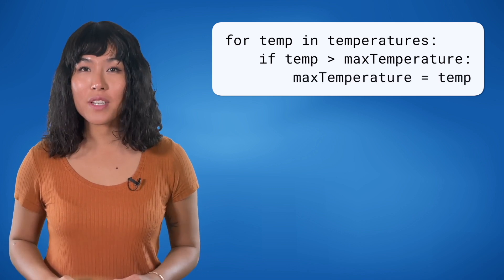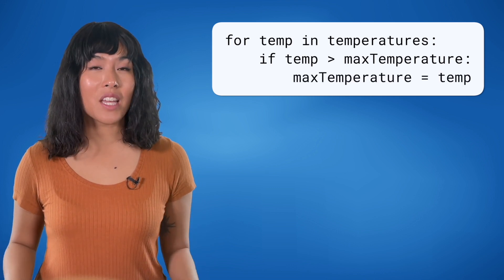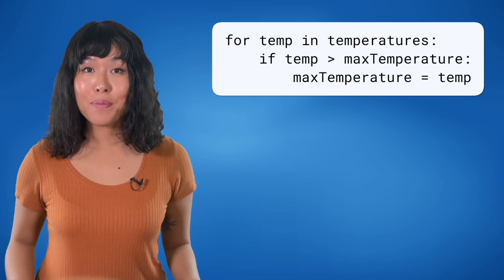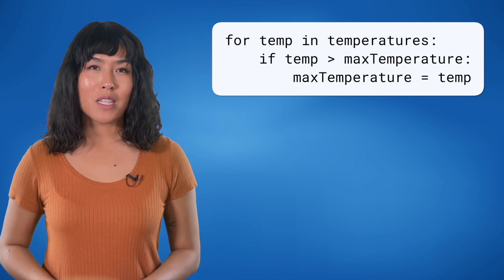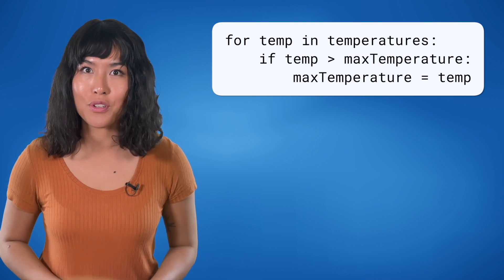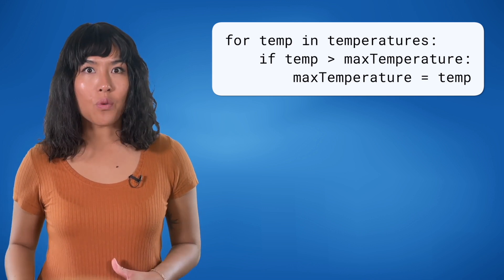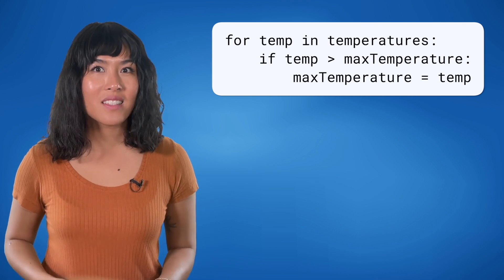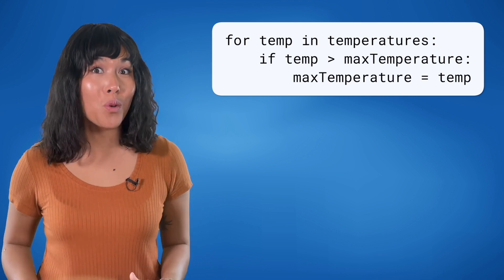If the current temperature, temp, is indeed higher than our assumed highest max temperature, then we update max temperature to be equal to the current temperature. It's like saying, oh, this temperature is higher than we thought was the highest, so let's consider this one as the new highest.